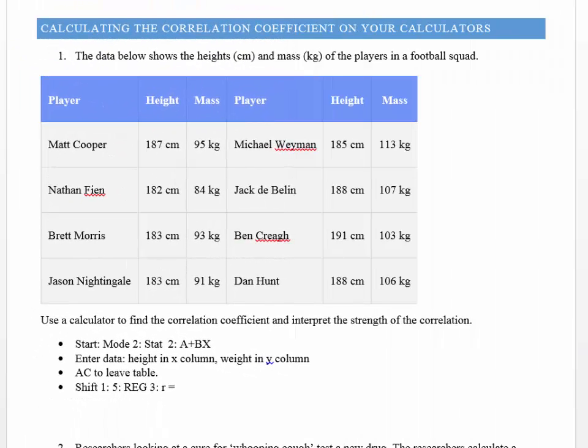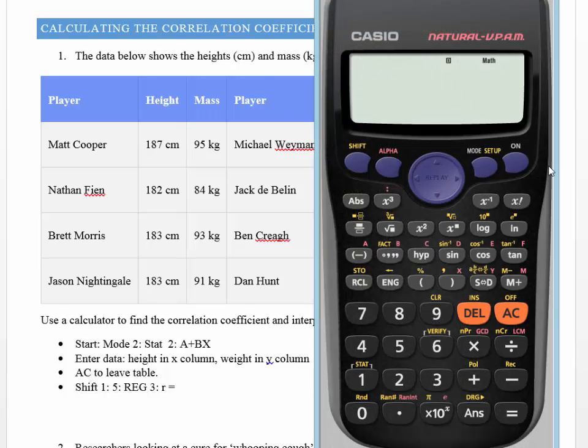So what we're going to be looking at today is just being able to use your calculator to find this correlation coefficient. So the first thing you need to do is you need to have these notes out in front of you and a calculator up there as well.